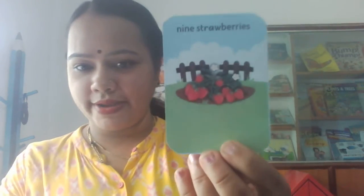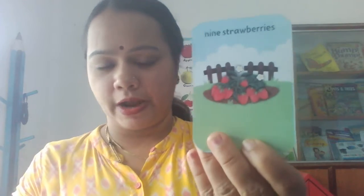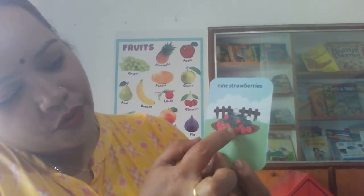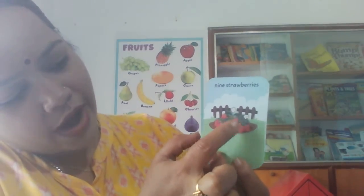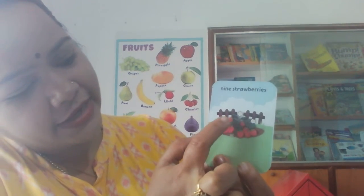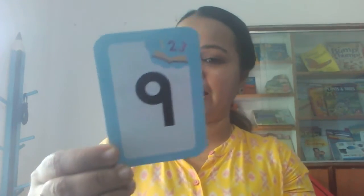After 8 the number is 9. Now we will count the strawberries in the picture card. 1, 2, 3, 4, 5, 6, 7, 8, 9. How many strawberries are there? There are 9 strawberries. And the number is 9.